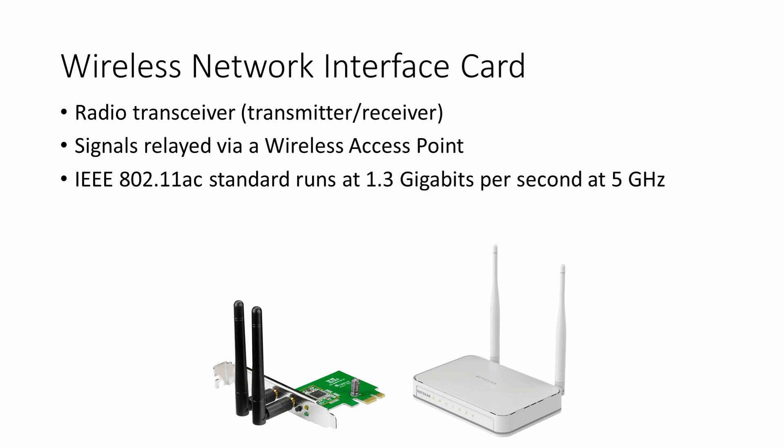This standard has evolved over the years, but one of the most commonly used versions is the 802.11ac standard, which is also known as Gigabit Wi-Fi. This operates at speeds of up to 1.3 Gbps in the 5 GHz radio frequency band.